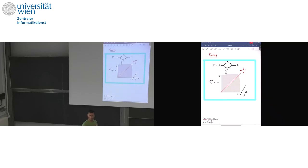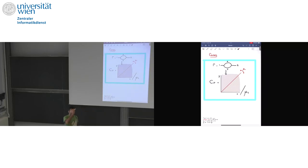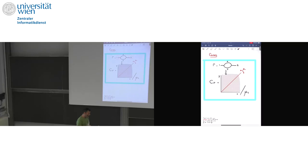If you fix a topological type of a tropical curve — so fix the graph, the genus function, and everything else — but consider all possible lengths that the edges can take, then the parameter space of abstract tropical curves of fixed topological type becomes a cone, and it's actually a very simple cone: R greater than or equal to zero to the number of edges. For example, you have a tropical curve of genus one with two marked points that looks like a candy, and it has two edges that can have lengths x and y — so if you want to parametrize all curves with this topological type, you've got the first quadrant in the plane.